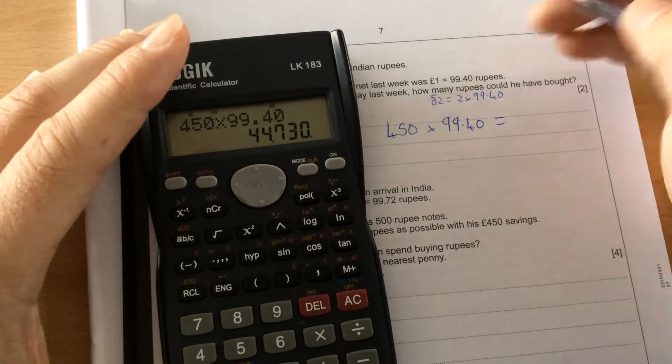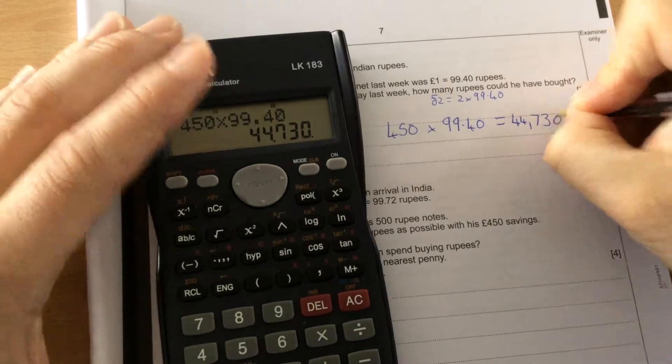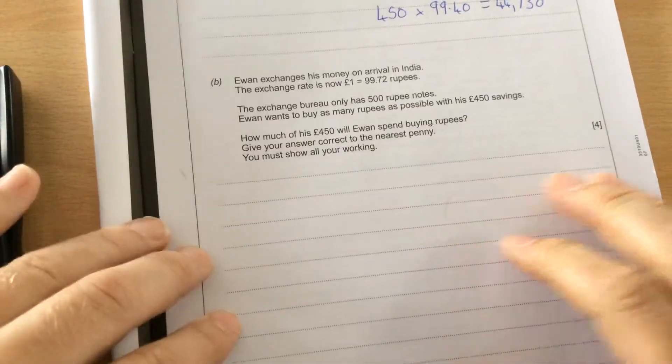So when we change money from ours to theirs, you multiply by the exchange rate. Part B.